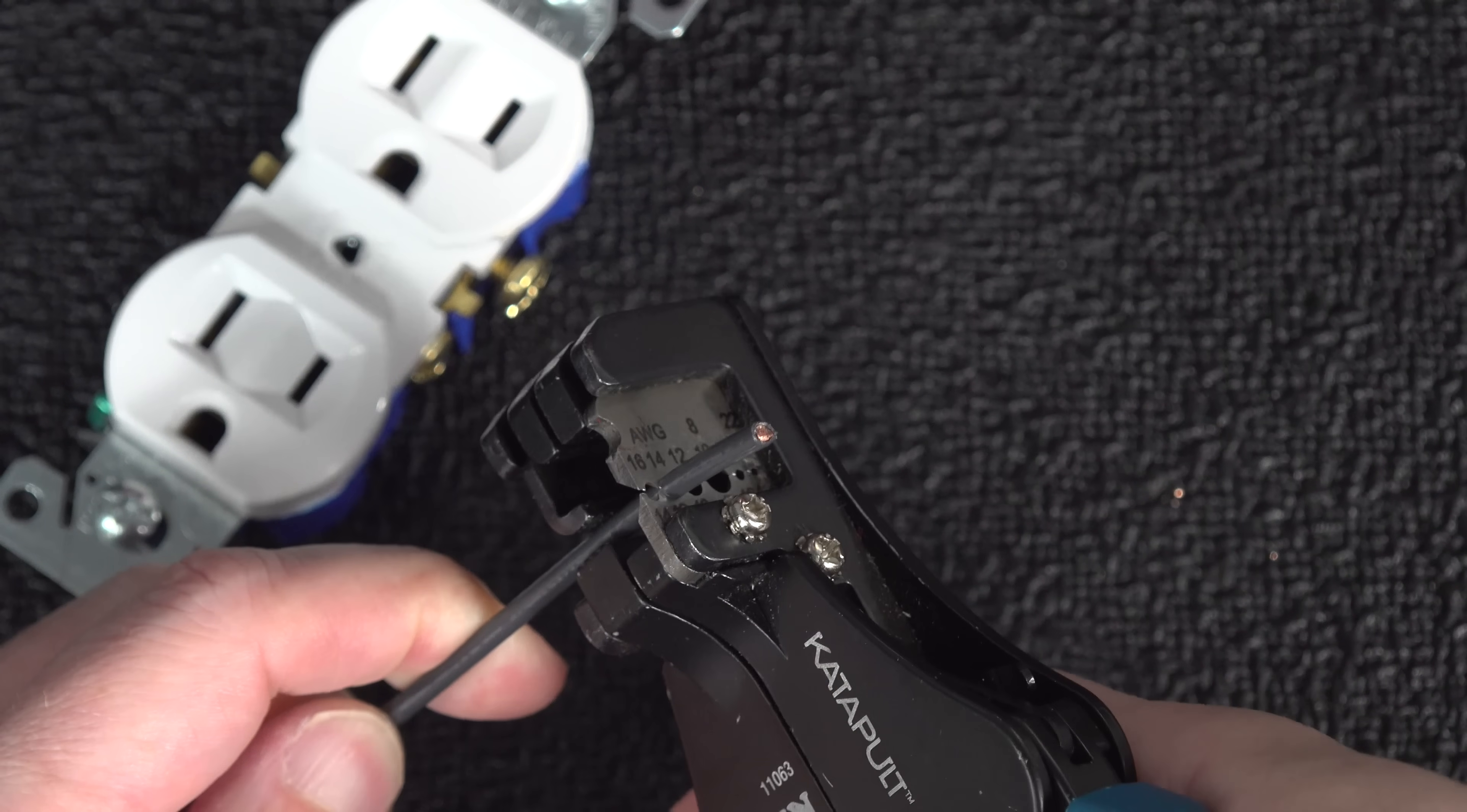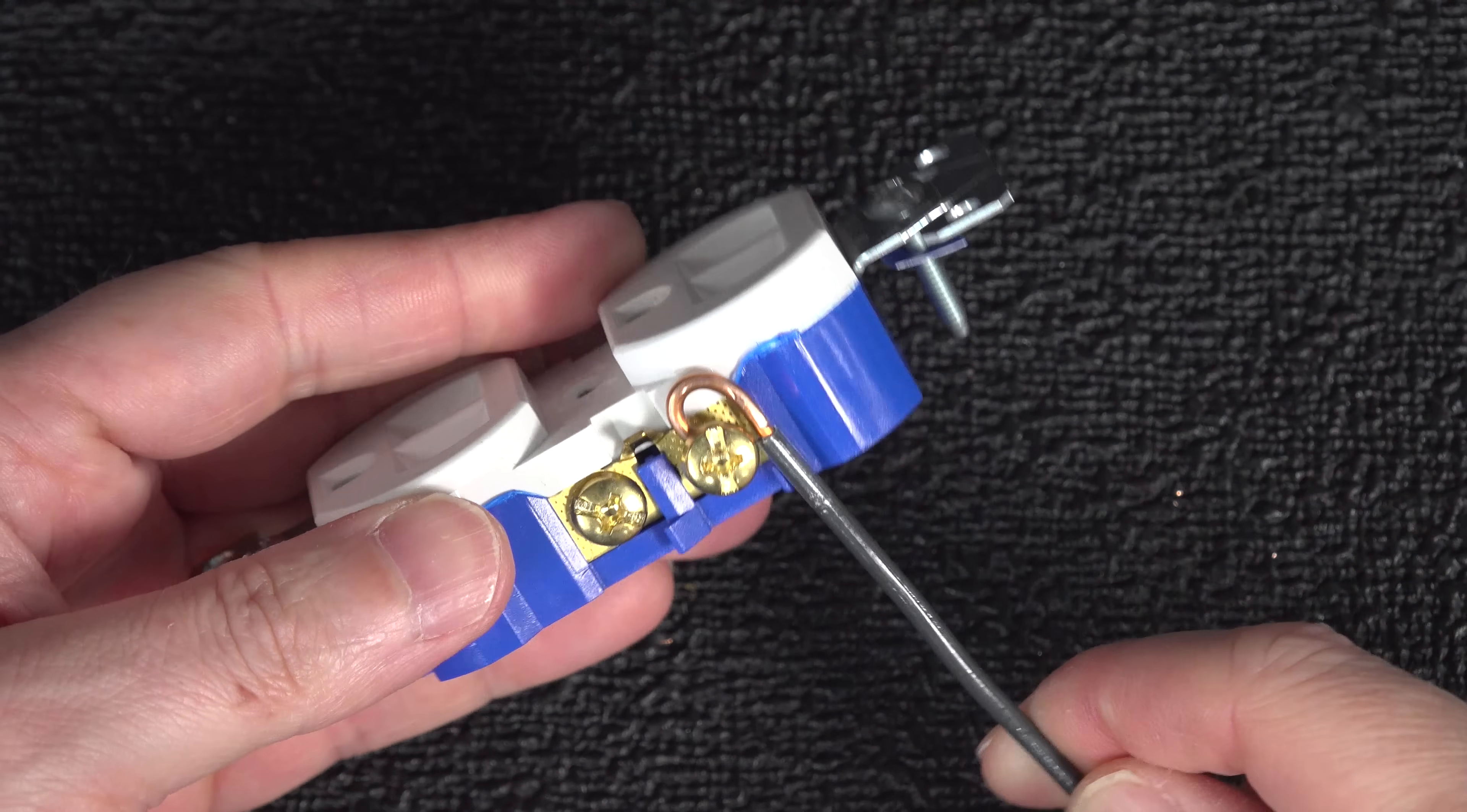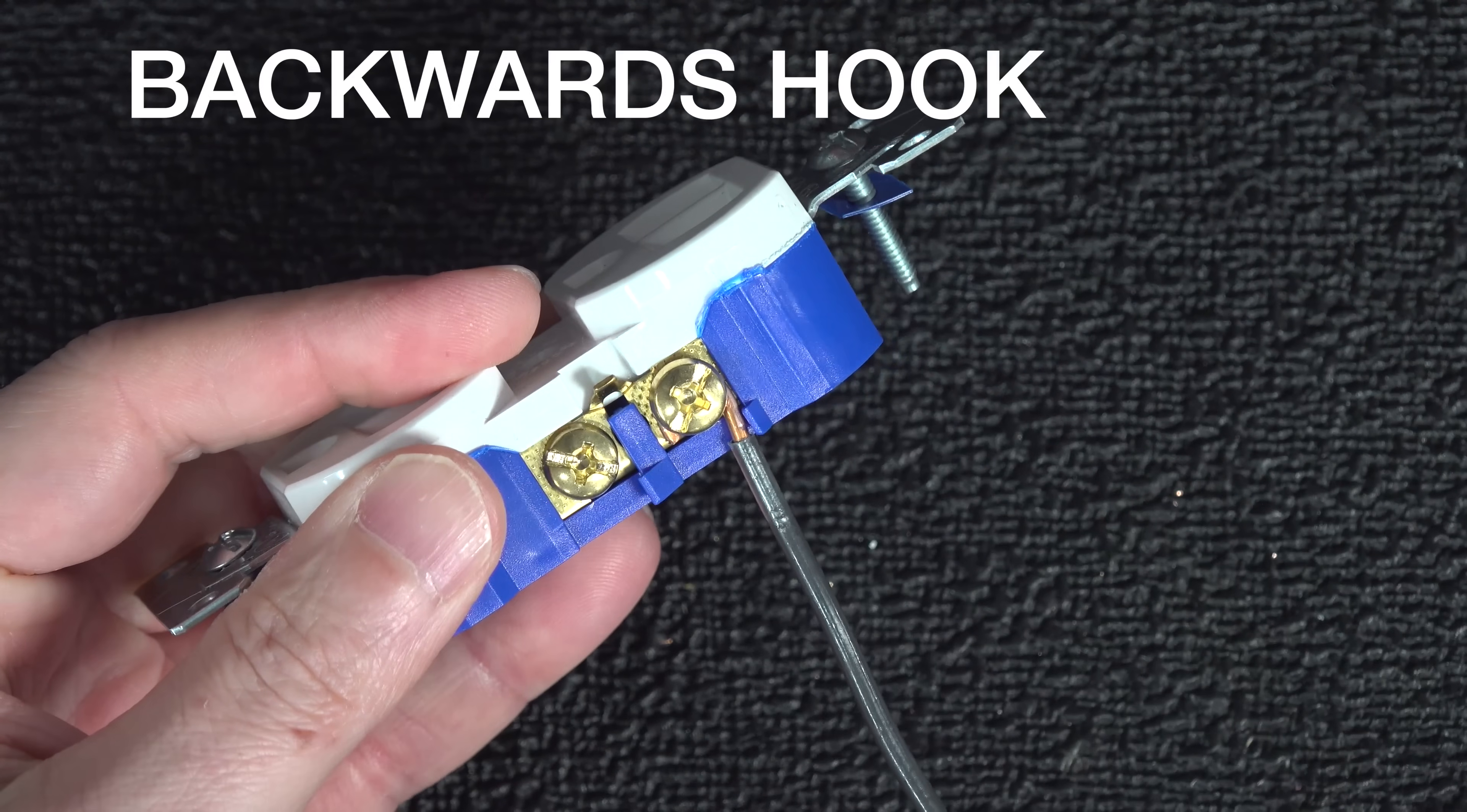Now we should be on easy street, just strip your wire, make a hook, and then put it onto the screw in the outlet and tighten it down. Now you might think this looks great, but I've done it completely wrong and this is the second most common mistake. I've put the hook on backwards.